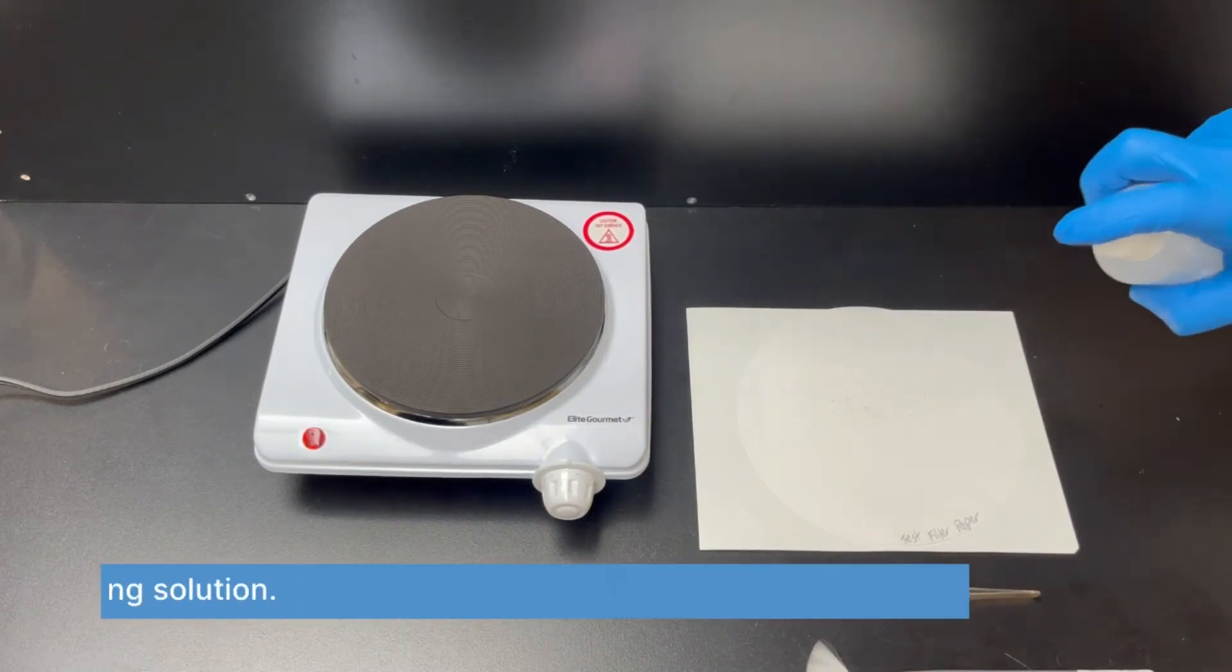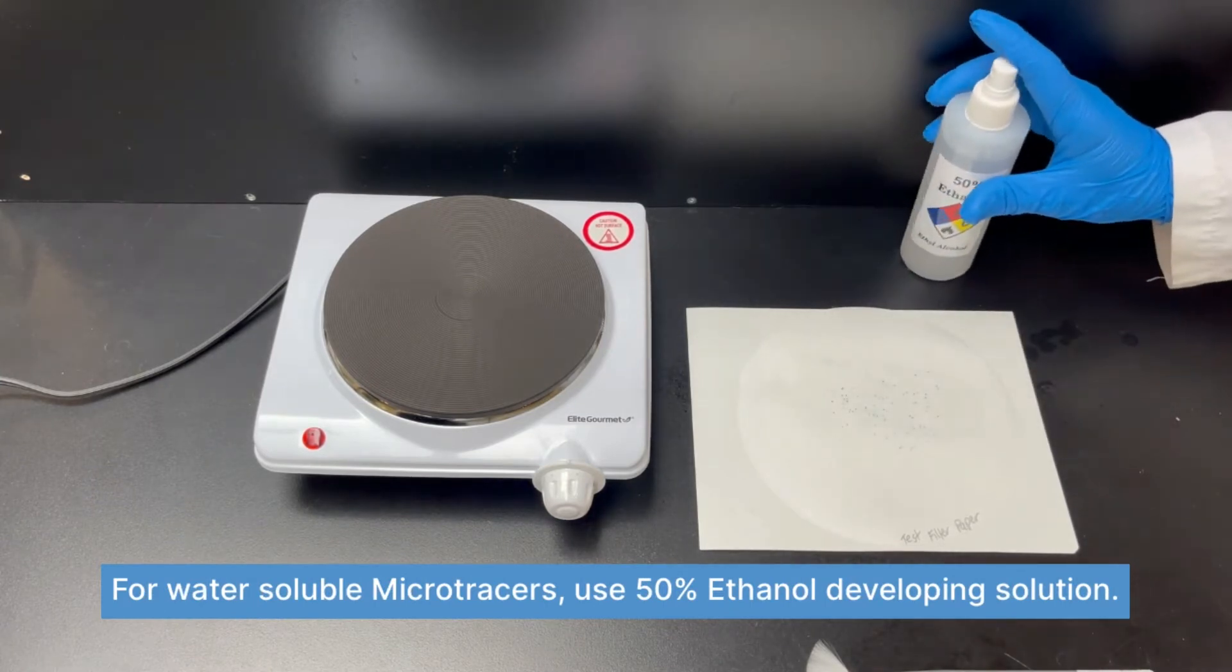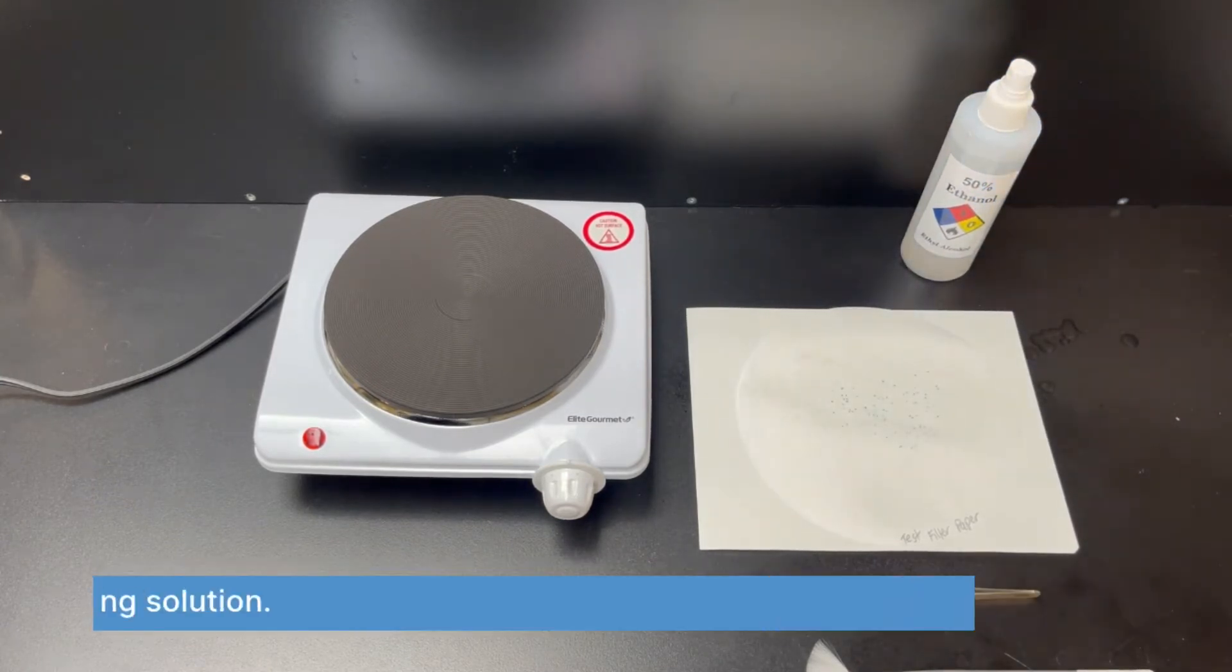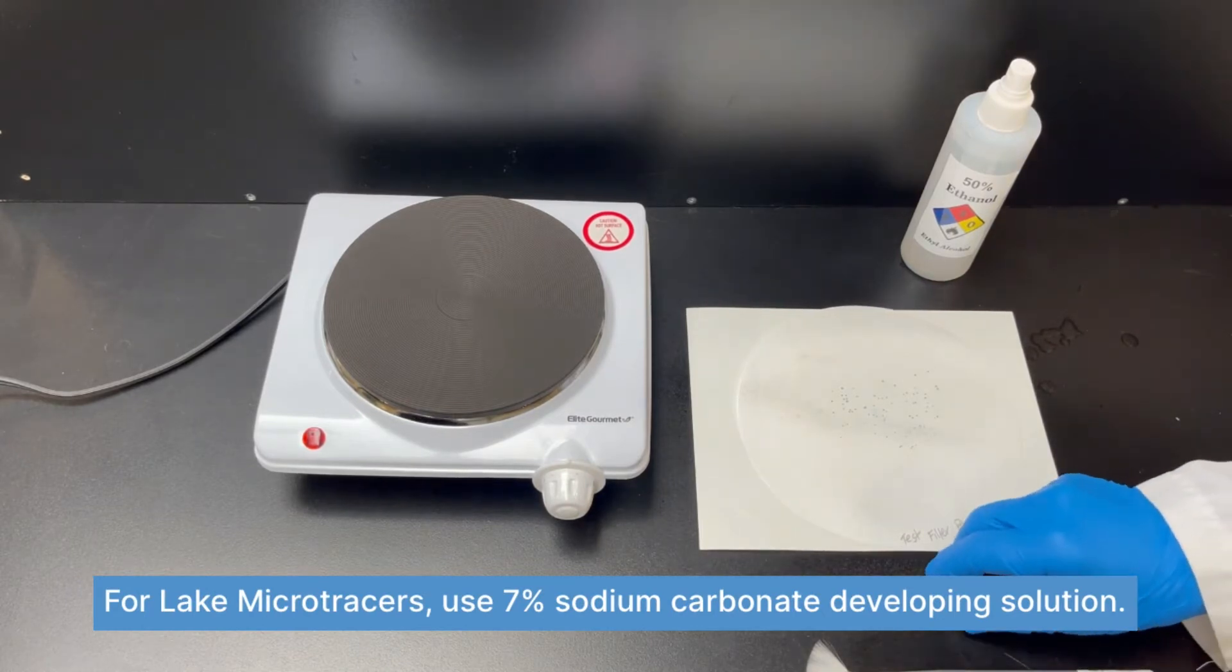For water-soluble dyes, use a 50% ethanol developing solution. For lake dyes, use a 7% sodium carbonate developing solution.